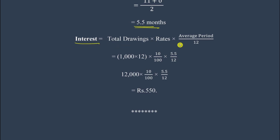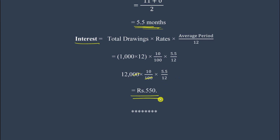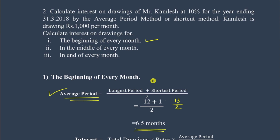Applying the interest formula: Interest = Total Drawings × Rate × Average Period / 12. The average period is now 5.5. So: 12,000 × 10/100 × 5.5 / 12. Cancelling zeros: 120 × 10 × 5.5 / 12 = 550 rupees. The interest for drawings at the end of every month is 550 rupees.